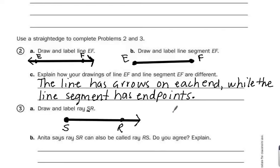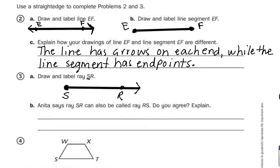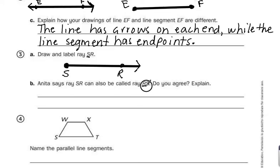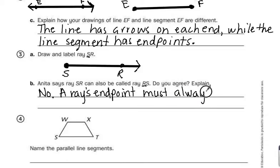Letter B, Anita says ray SR can also be called ray RS. Do you agree? Explain. The answer to this is no, I do not agree with Anita. The reason is if it were ray RS, then the endpoint would be the R, because when labeling rays, the first letter is always the endpoint. So, do you agree? No. Explain. A ray's endpoint must always be listed first when naming a ray.